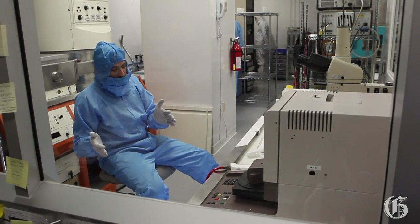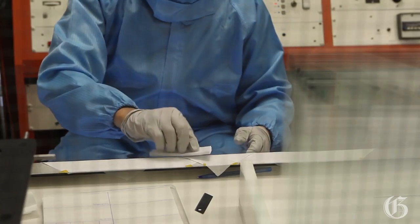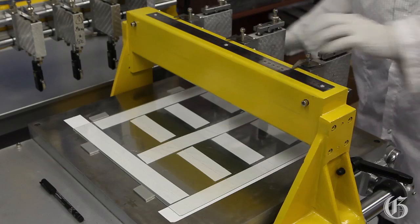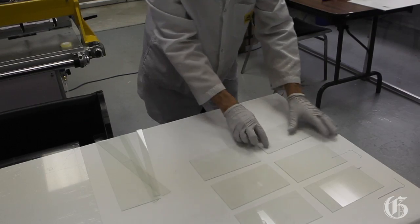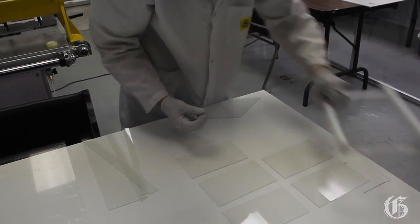After photoresist stripping and cleaning, the substrates go to a glass cutting machine where we cut those sensors in order to get six sensors.